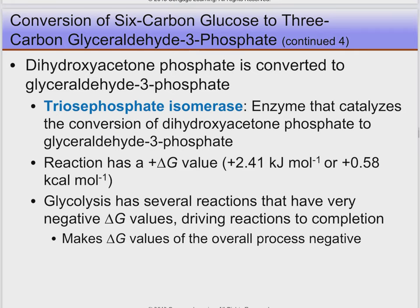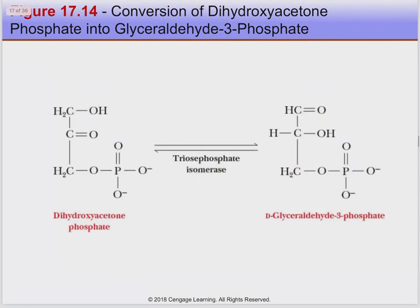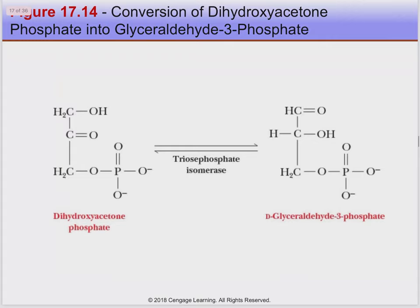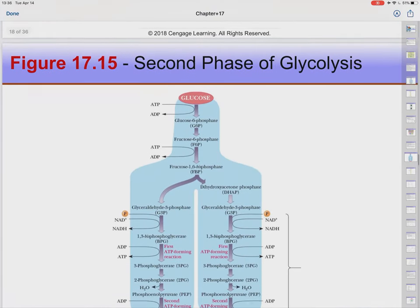Reaction five: dihydroxyacetone phosphate is isomerized by triose phosphate isomerase. This reaction is endergonic — it costs energy. Some of the 10 reactions cost energy, but the beauty of this process is that they're all coupled together. There's enough free energy from the exothermic reactions to cover these costs, and even enough to keep us warm and make some ATPs. We see the carbonyl carbon position switch to give us another D-glyceraldehyde 3-phosphate.